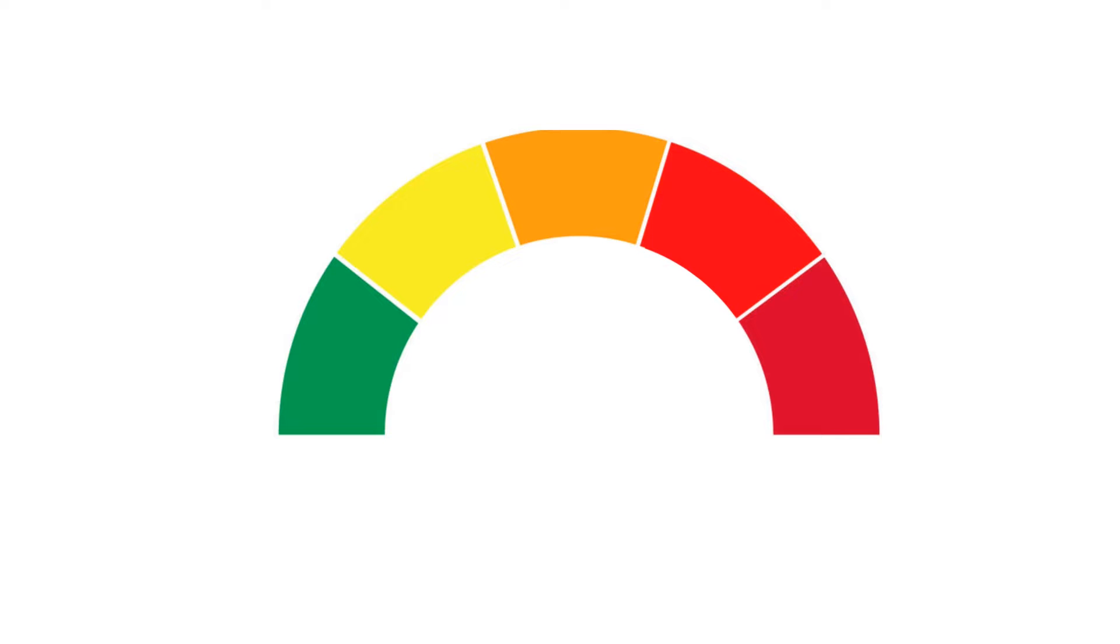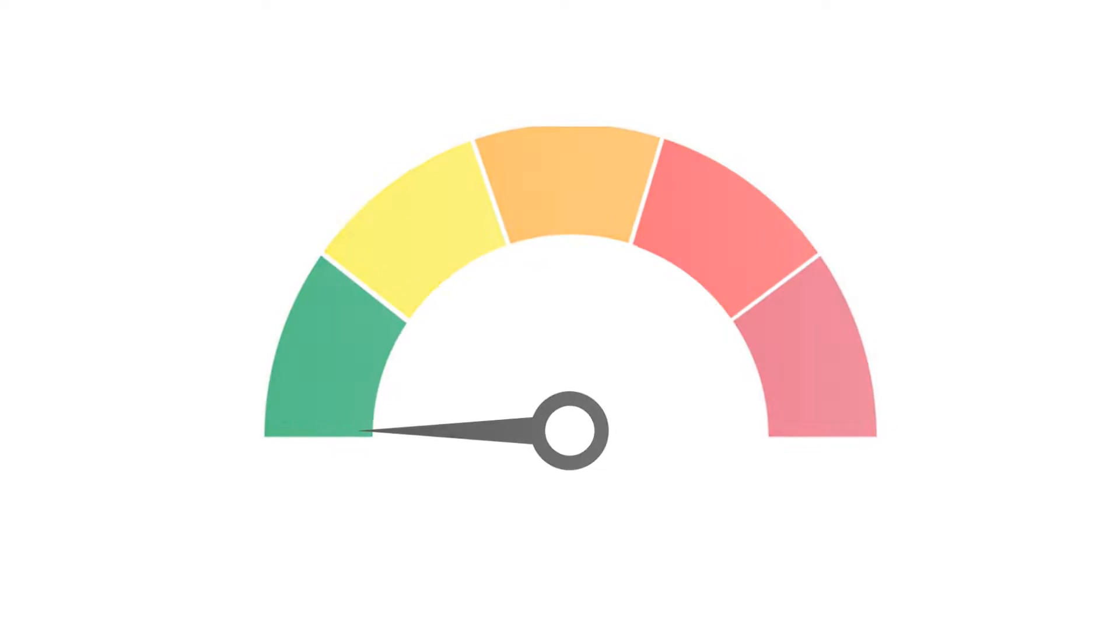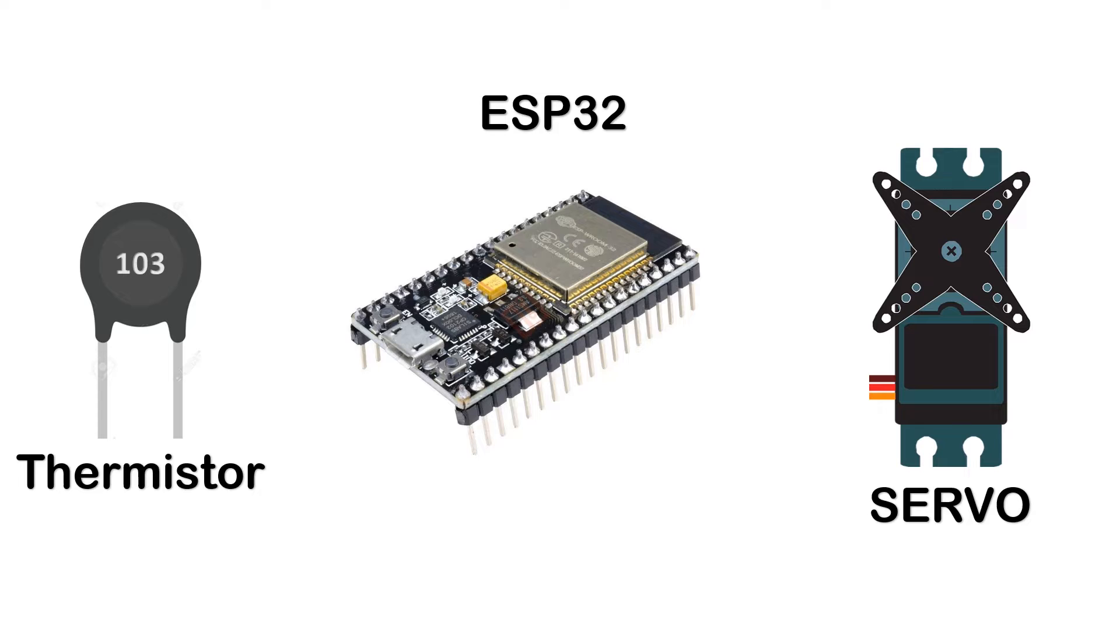This is an analog display and I will attach a pointer with the servo motor shaft and it will indicate the temperature value by changing its angle. Now coming back to the main system, the thermistor sends the temperature value to the ESP32 microcontroller and ESP32 will process the temperature value and drive the servo motor.